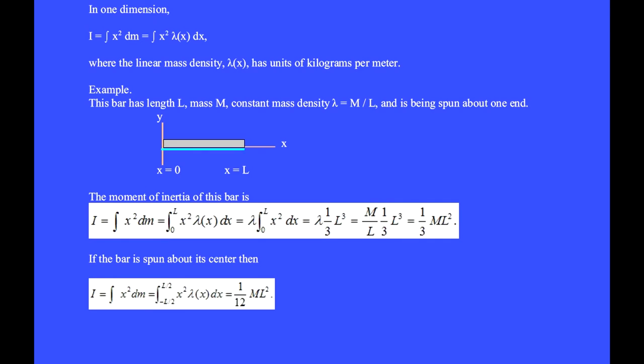For example, this bar has length l, mass m, and constant mass density lambda equals m over l, and is being spun about one end. We put the x axis along the bar, with x equals 0 at one end and x equals l at the other end. A differential piece of mass dm is the distance x from the spin axis.